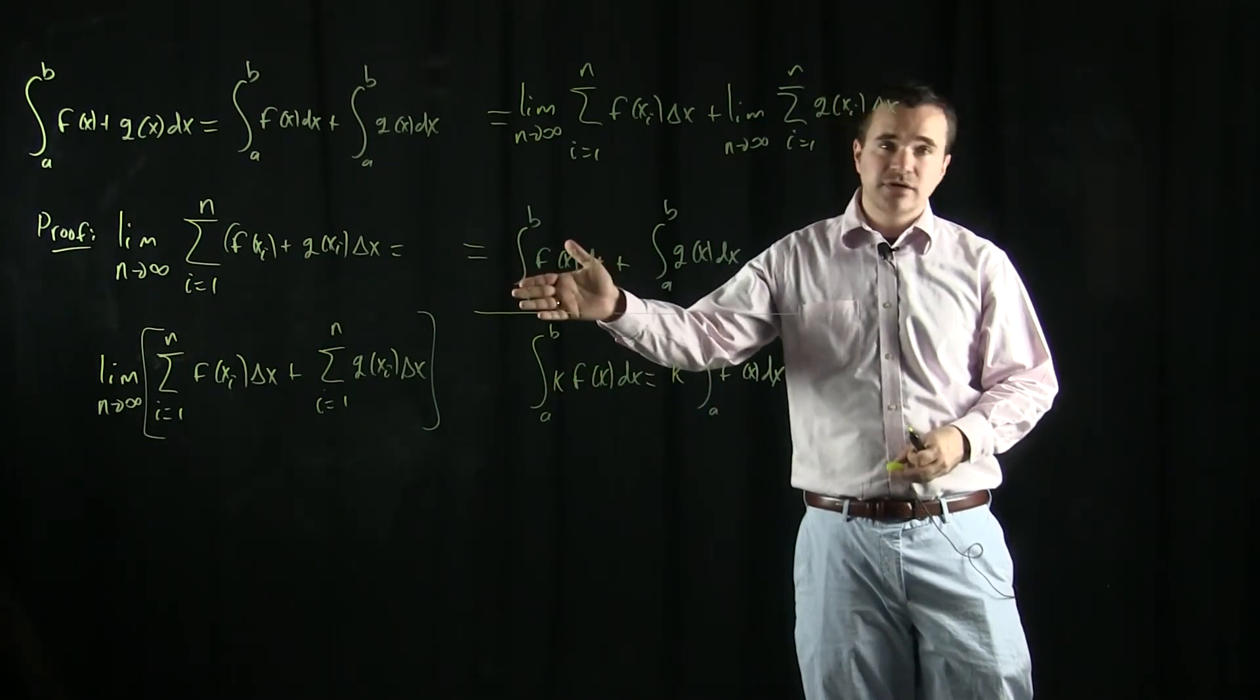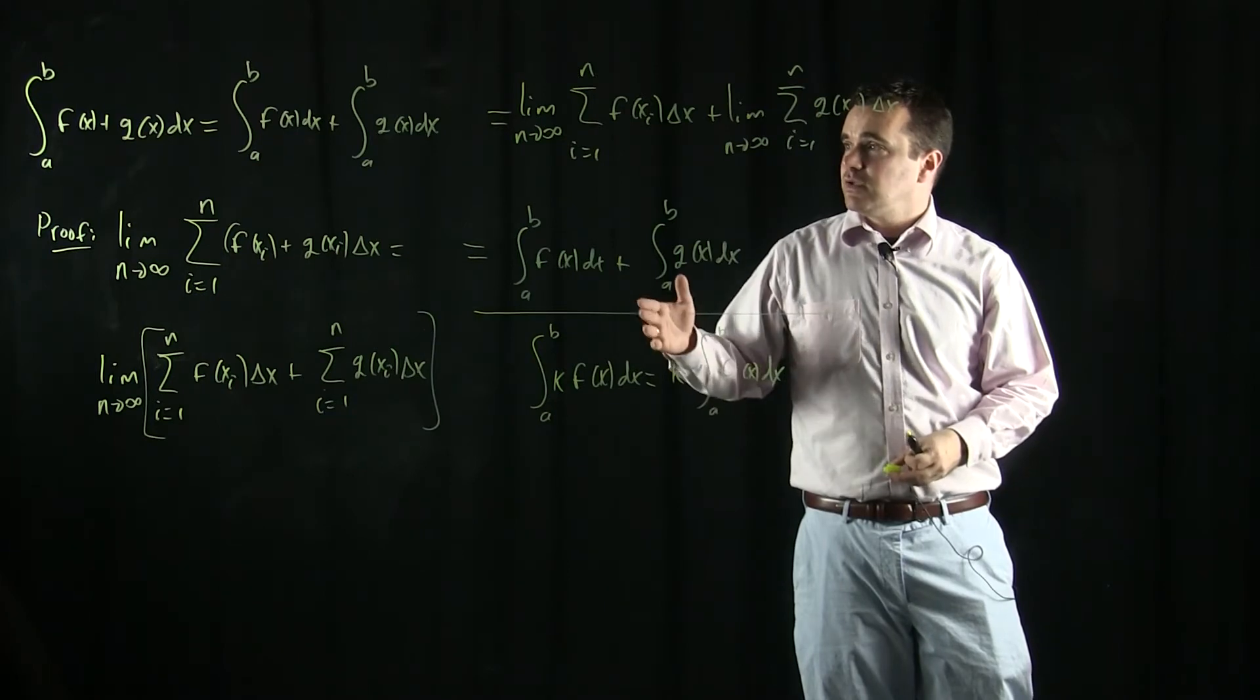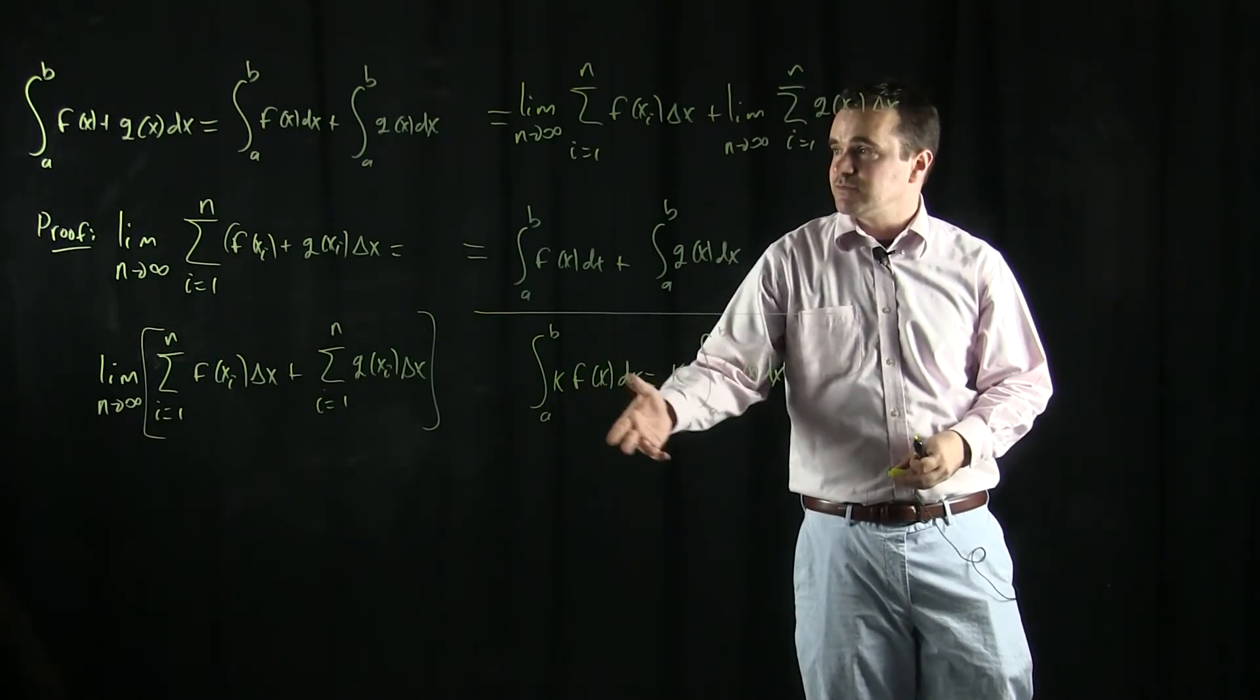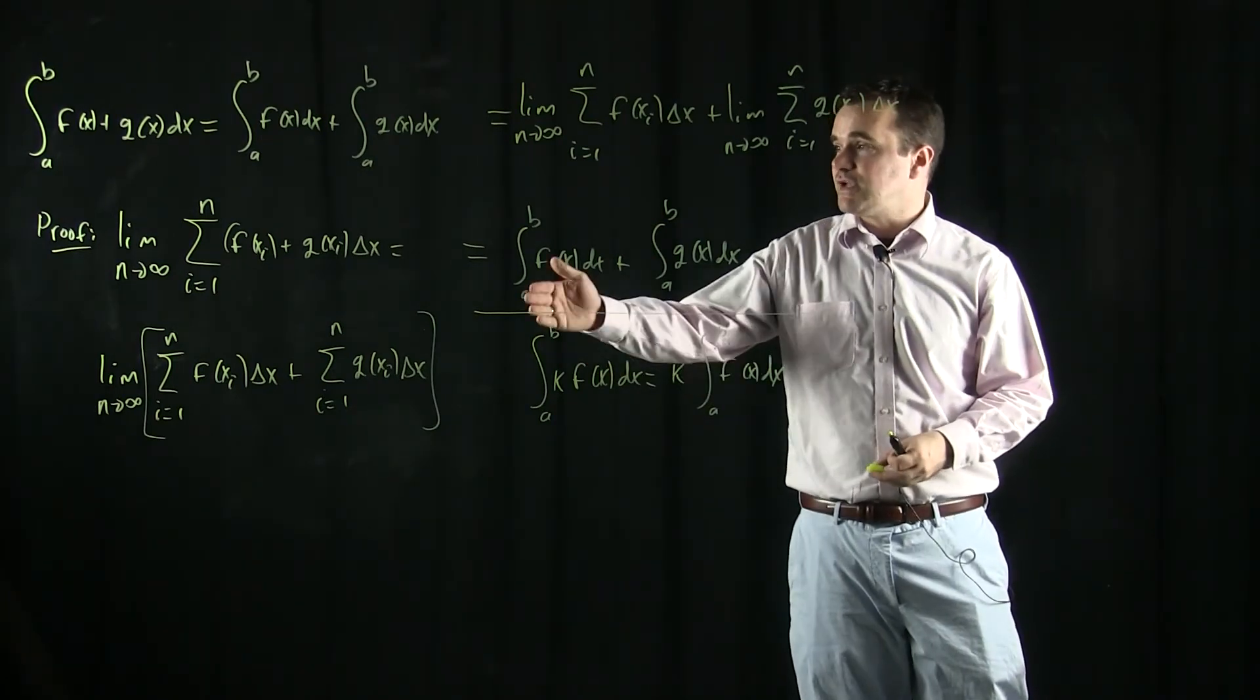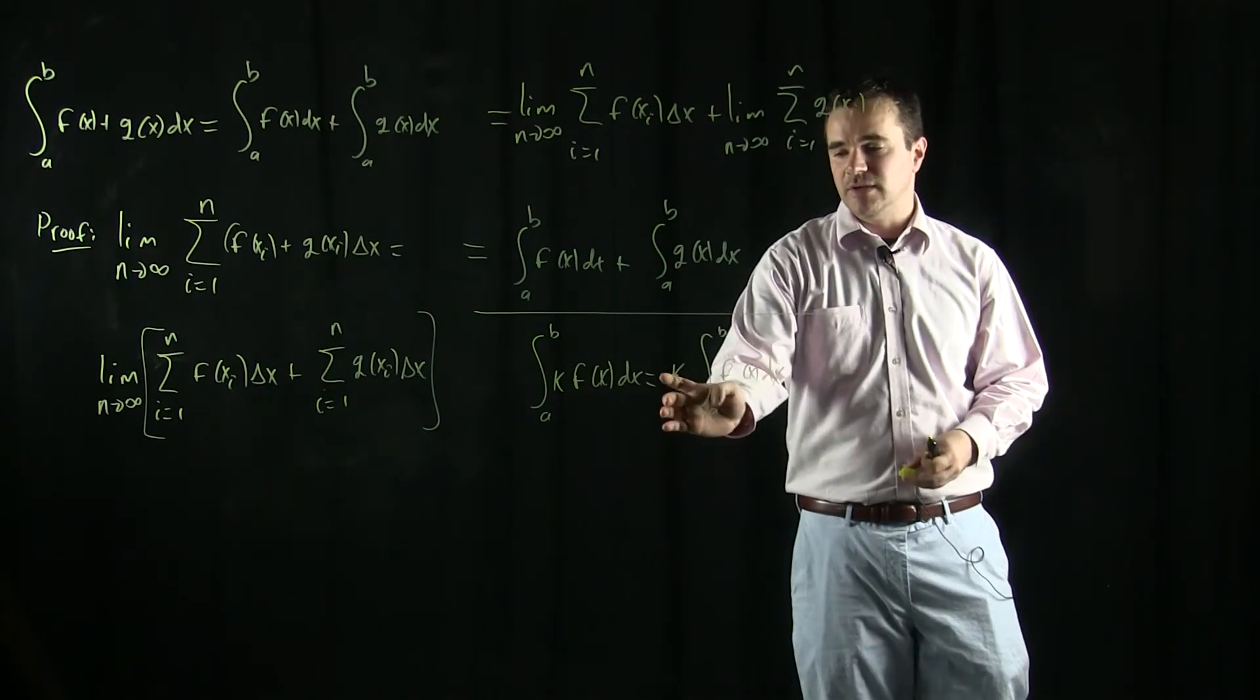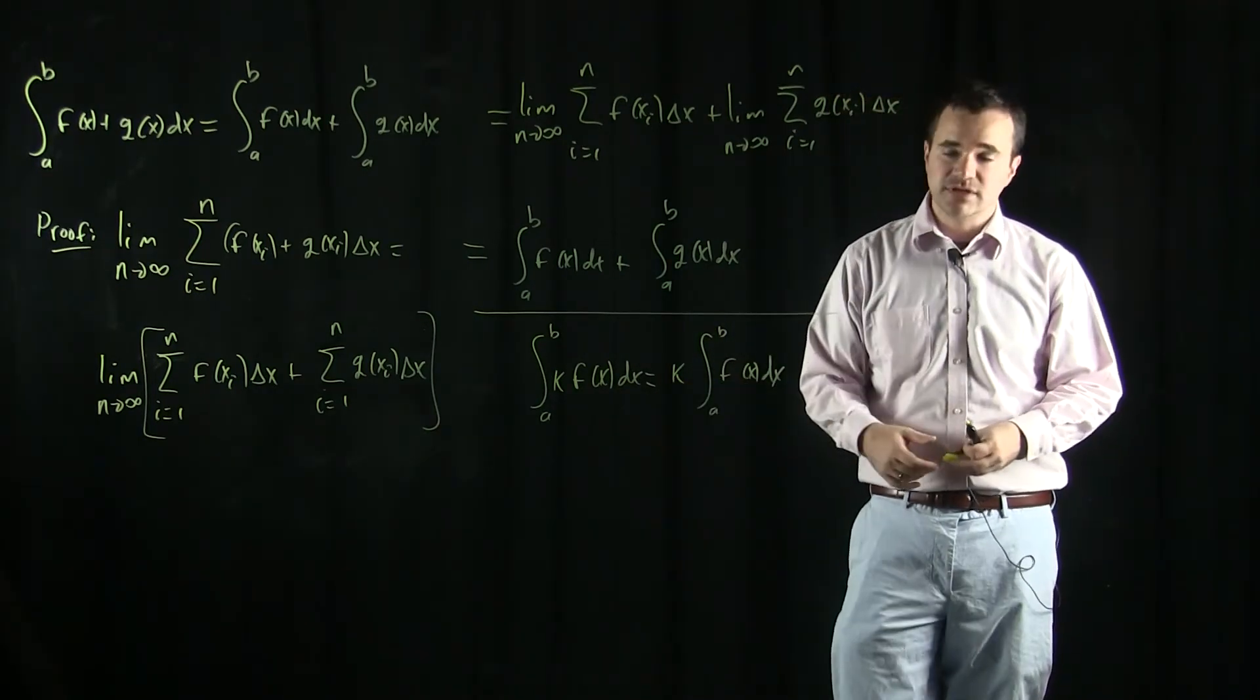And it would be like over there, it'd be a limit as n goes to infinity of k times f of xi taking the sum, i goes from one to n. And then you just pull out the k from the sum and then use the limit law to pull out the k from the limit. And you'll end up with k times the definition of the integral.